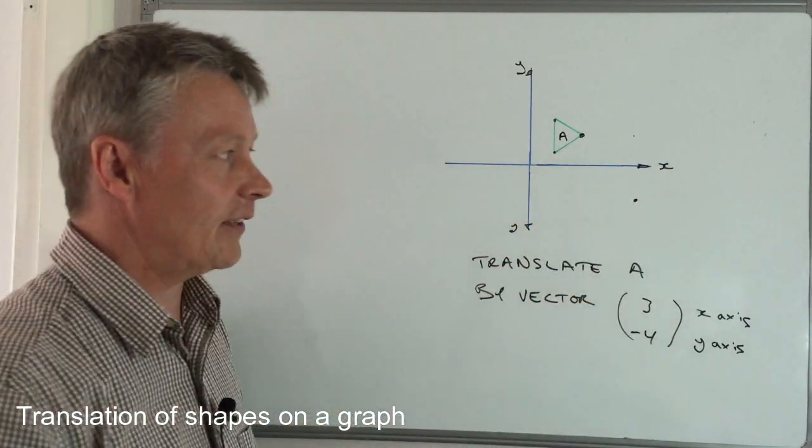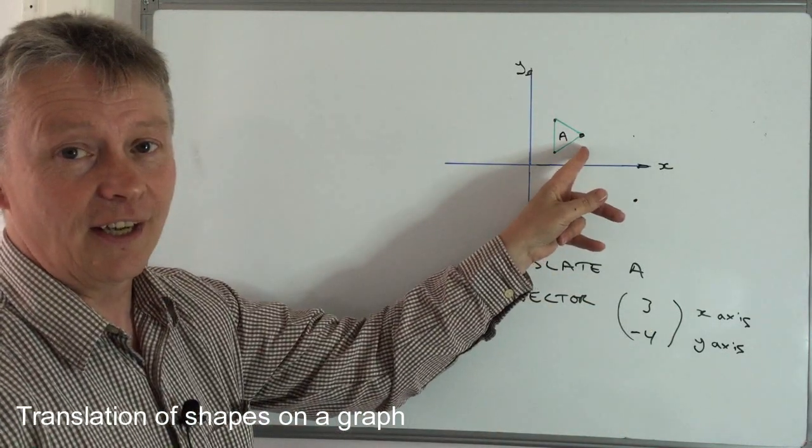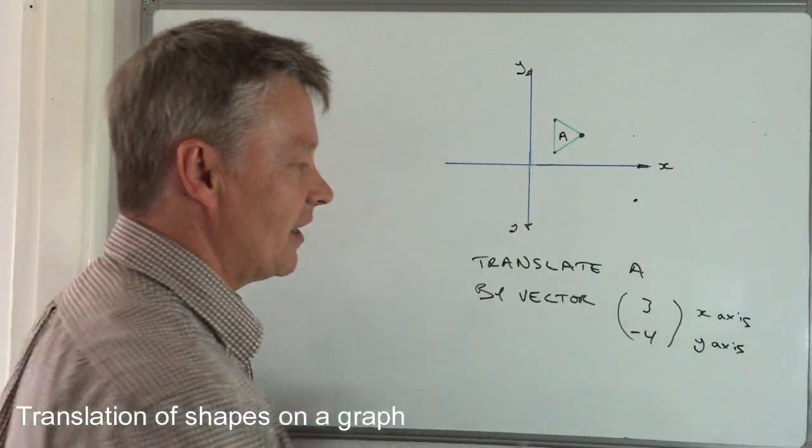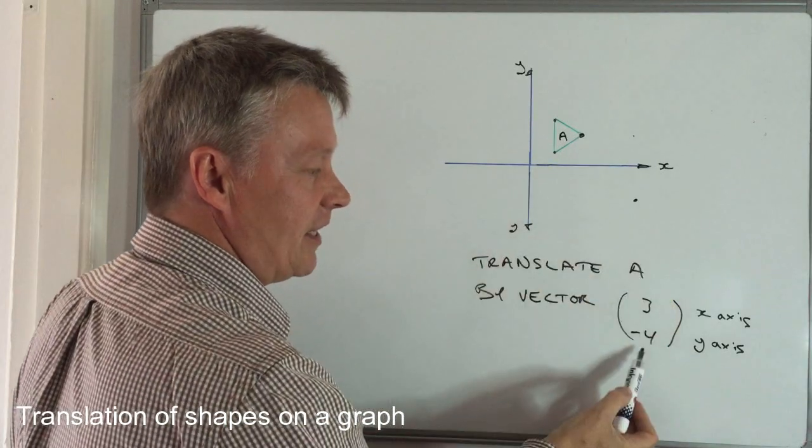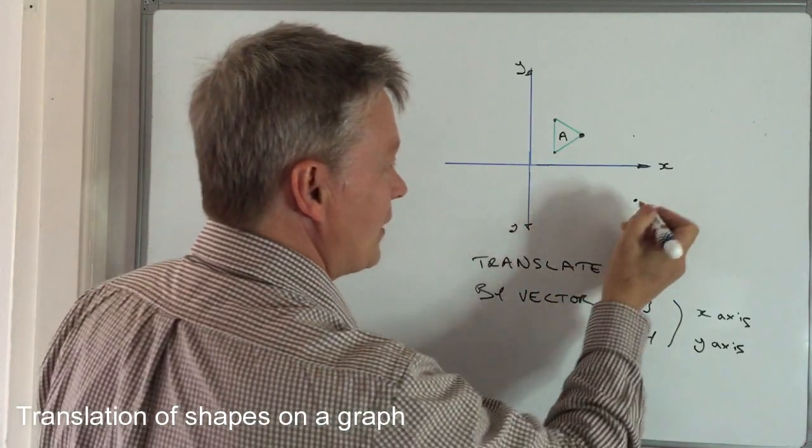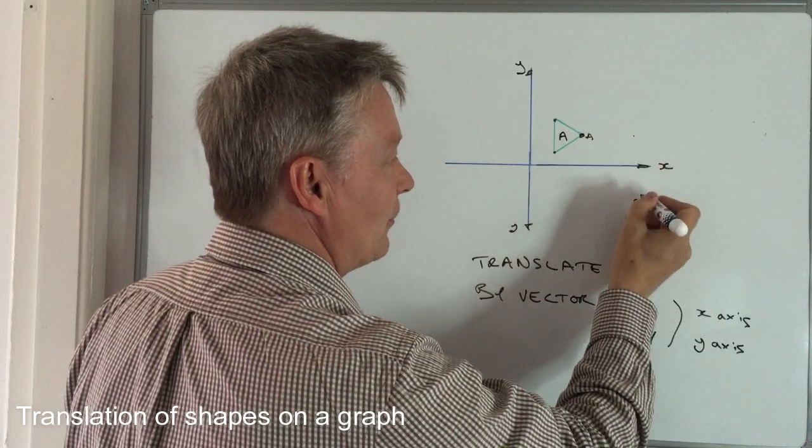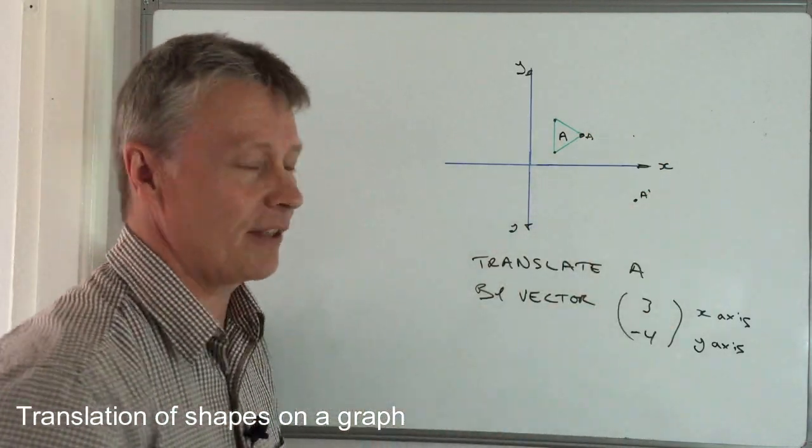So that's given me—if I call this A, I would call this A prime. Now I am using a triangle, which is a relatively easy shape to follow, but sometimes these questions can get a little bit tricky.